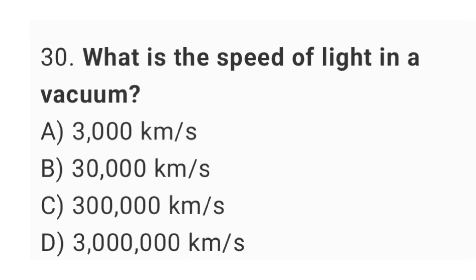Question No. 30: What is the speed of light in a vacuum? The right answer is option C, 3 lakh km per second.